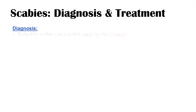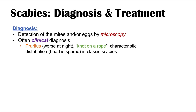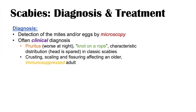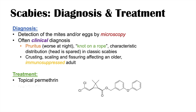The diagnosis of scabies can be made by microscopy — looking for mites and/or eggs — but it's often diagnosed clinically. In classic scabies, pruritus worse at night and the knots-on-a-rope appearance of lesions are characteristic, with the head typically spared. In crusted scabies, you can see crusting, scaling, and fissuring in an older immunosuppressed adult. Treatment includes topical permethrin or oral ivermectin.